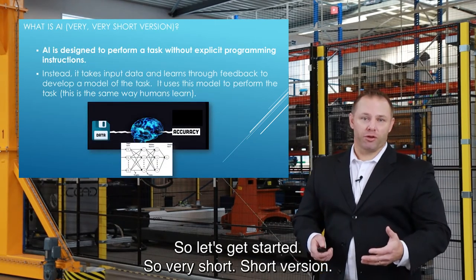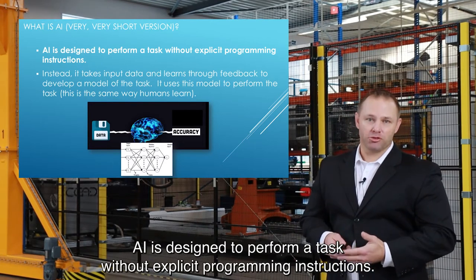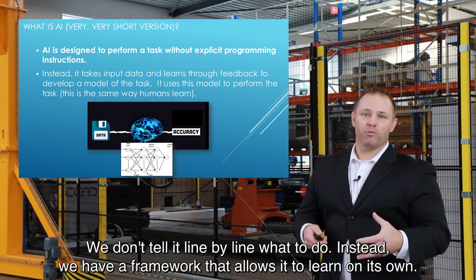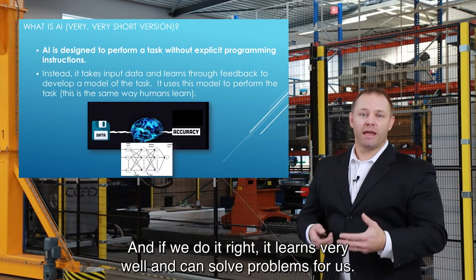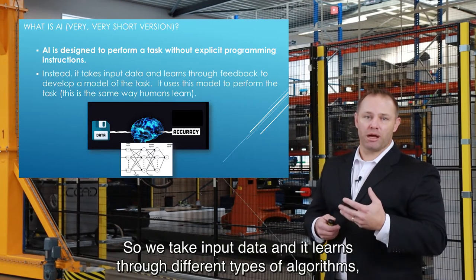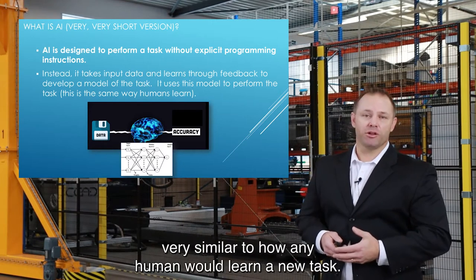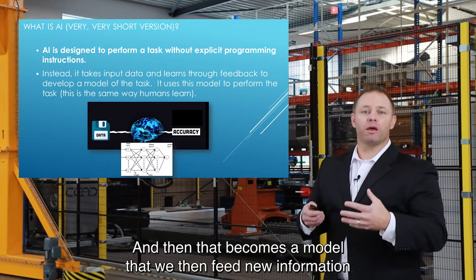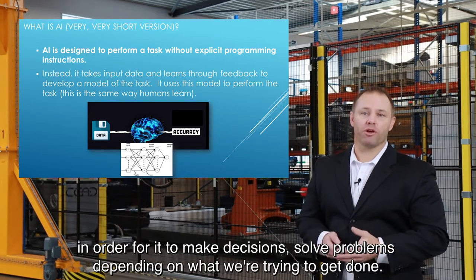AI is designed to perform a task without explicit programming instructions. We don't tell it line by line what to do. Instead, we have a framework that allows it to learn on its own, and if we do it right, it learns very well and can solve problems for us. We take input data and it learns through different types of algorithms, through feedback on what it's doing right and wrong — very similar to how any human would learn a new task. That becomes a model that we then feed new information in order for it to make decisions and solve problems depending on what we're trying to get done.